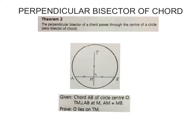If you're asked to prove this theorem, they will give you this sketch and this information. They will say you have a chord AB of a circle O — meaning the circle has a center O somewhere. TM is perpendicular to AB, as shown by that little block there, at M, and AM equals MB.